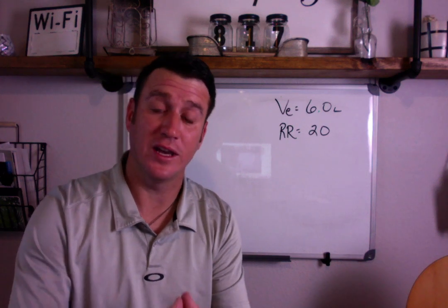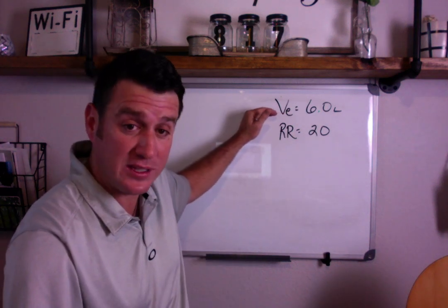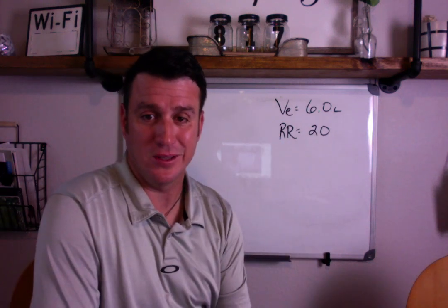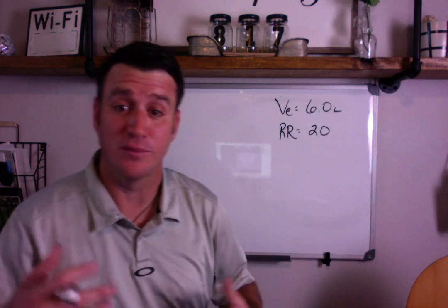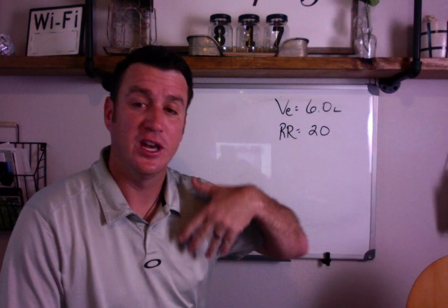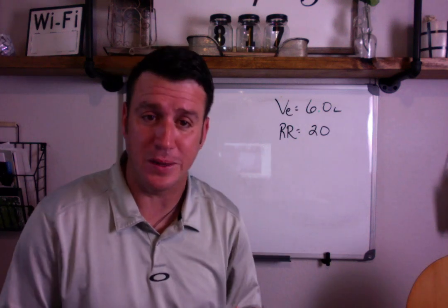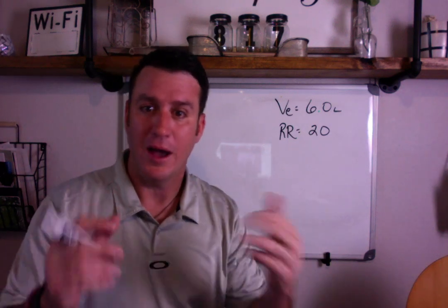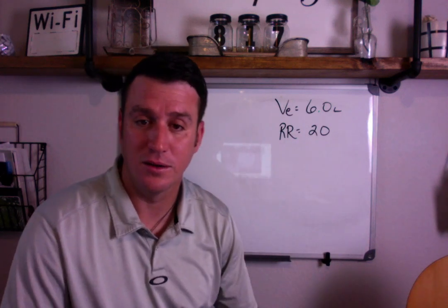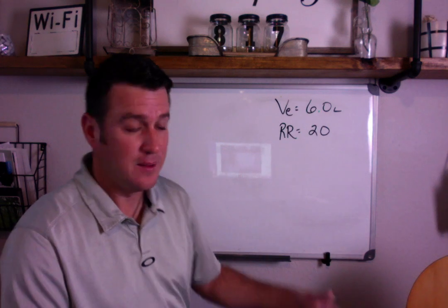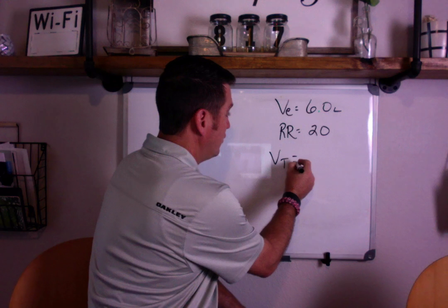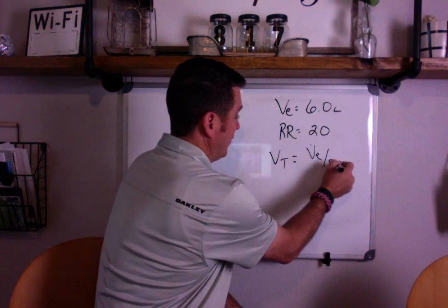Well, you have to use an average spontaneous tidal volume. That's why when you walk in that room, you want to grab your minute ventilation at rest and your respiratory rate at rest before you start messing with the patient and get them all worked up. So, you walk in, you find them breathing 20 times at 6 liters. You need to calculate an RSVI. You need an average spontaneous tidal volume. Well, you have the numbers you need right there.